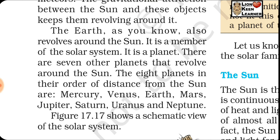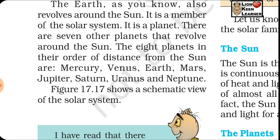The Earth, as you know, also revolves around the sun. It is a member of the solar system — it is a planet. There are seven other planets that revolve around the sun. Our Earth is also part of this solar system. The eight planets in order of distance from the sun are Mercury, Venus, Earth, Mars, Jupiter, Saturn, Uranus, and Neptune.